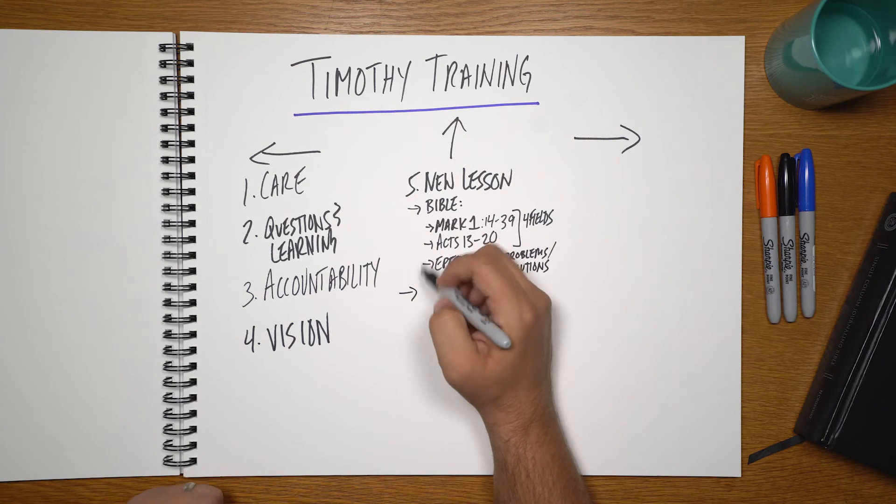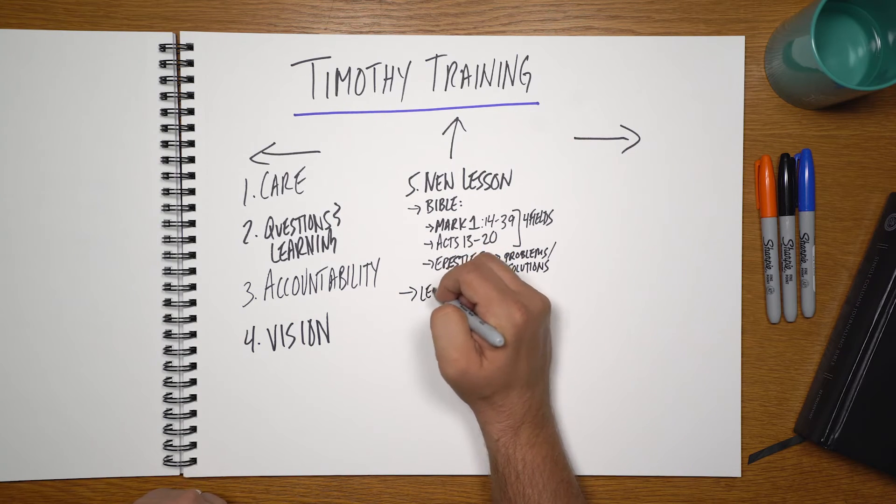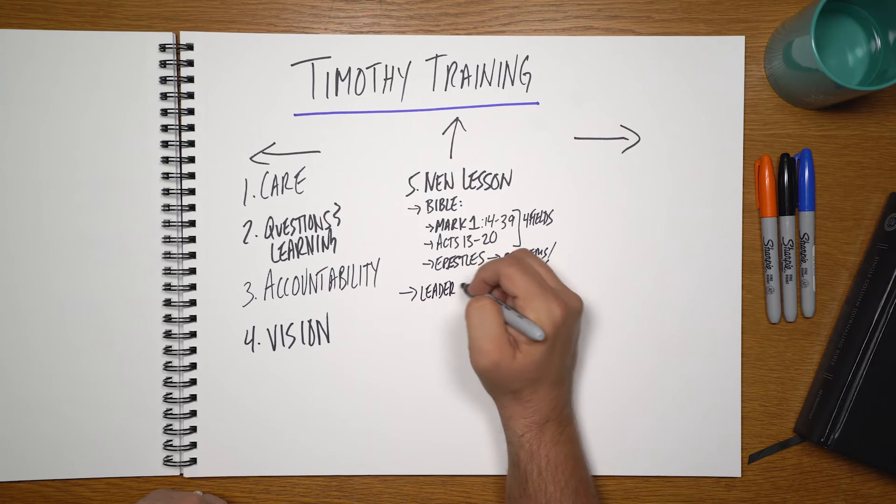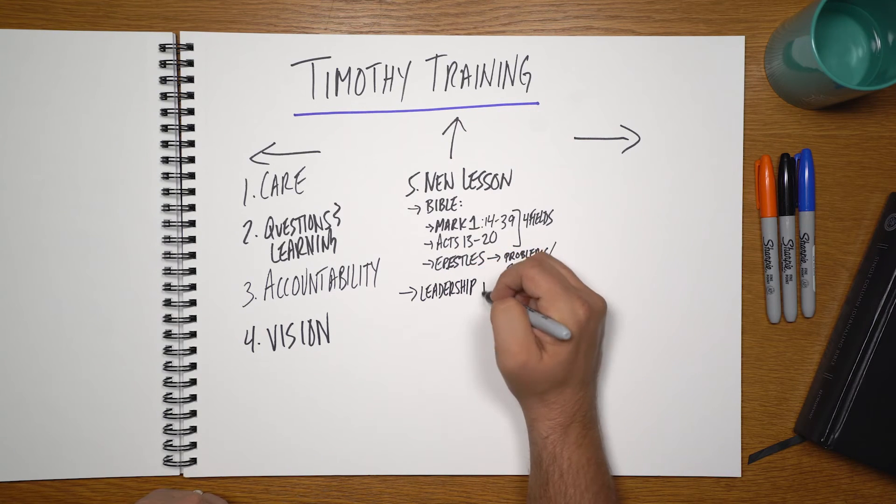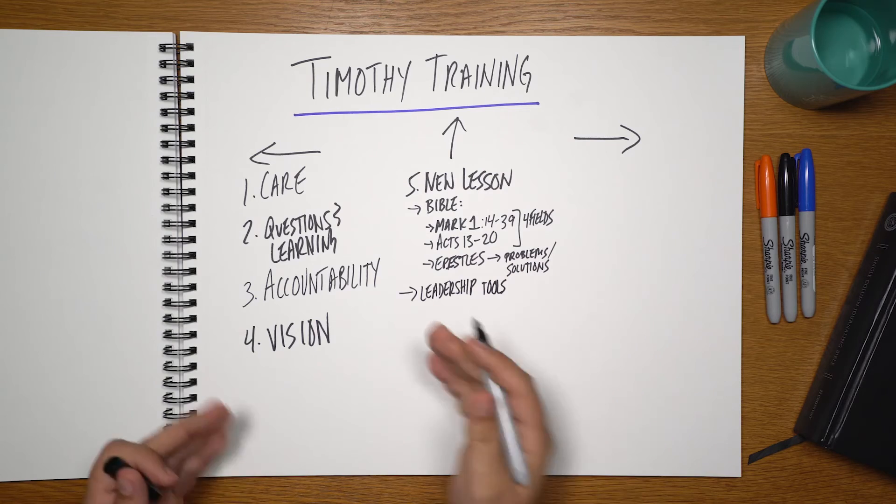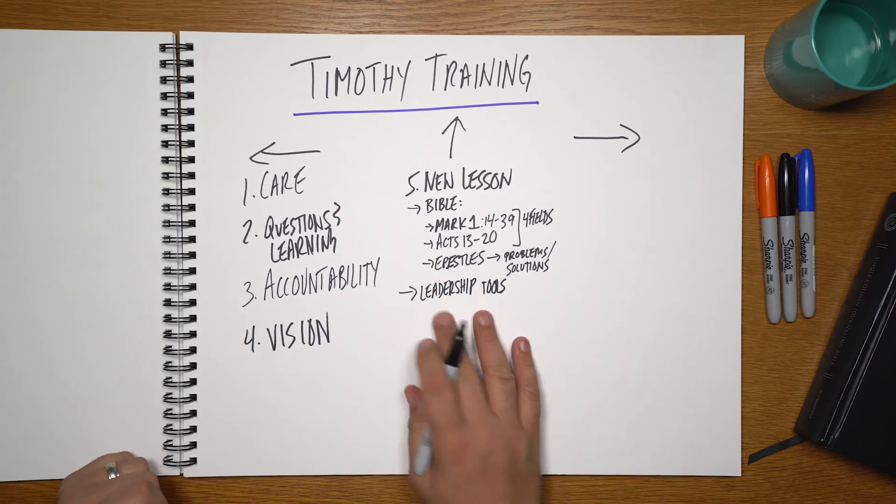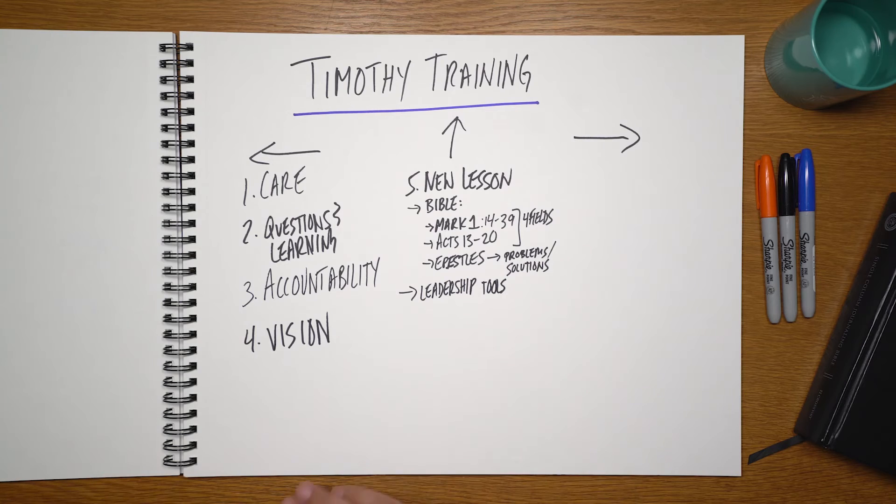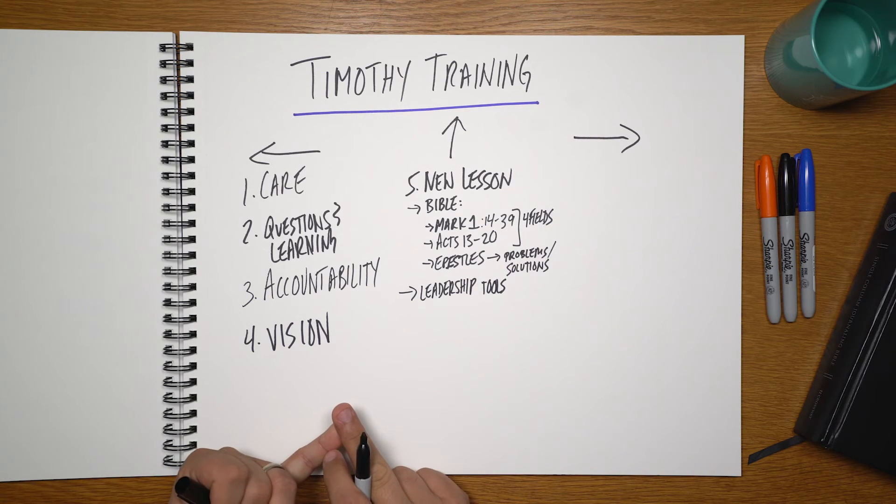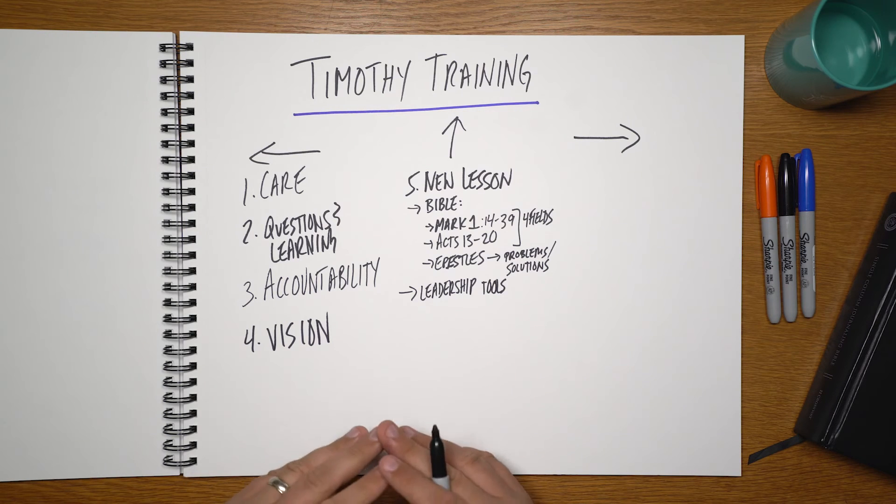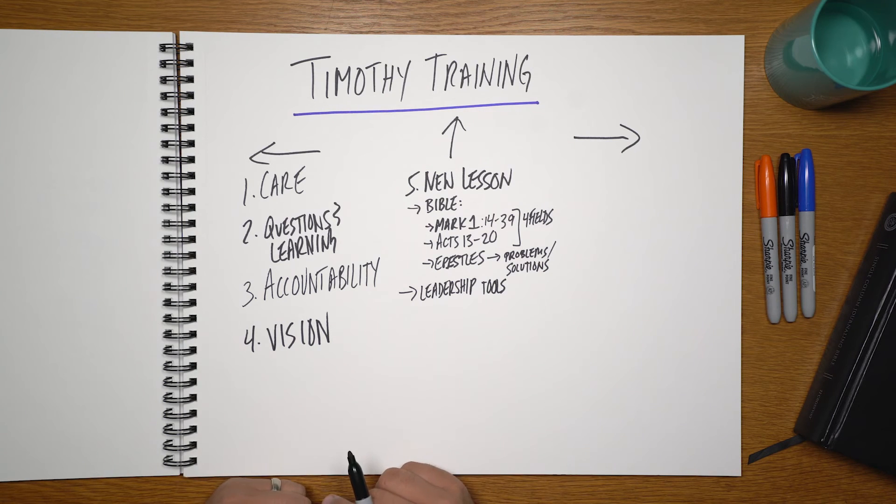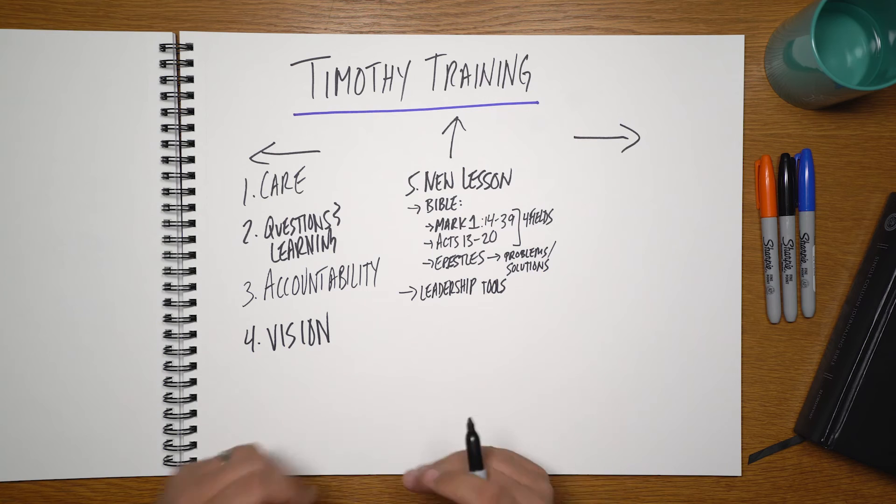But it's also a time to look at the field five leadership tools. Because sometimes we'll show up and based on what we're hearing in the care, the questions, learning, it's clear that they need a leadership tool like the five levels of leadership or the filters for faithfulness or some of those types of leadership tools that we don't find specifically in the commands and the 411.